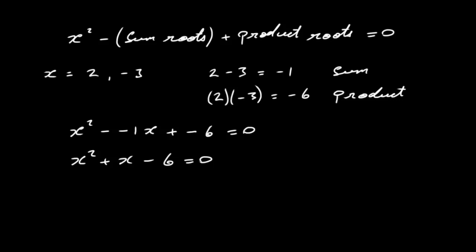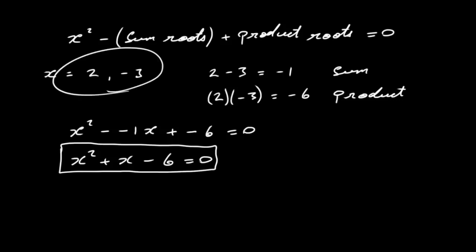This is only one possible equation — we can multiply across by any number. For example, multiplying by two gives two x squared plus two x minus twelve equals zero, which has the same roots but is another valid quadratic equation with these two roots.